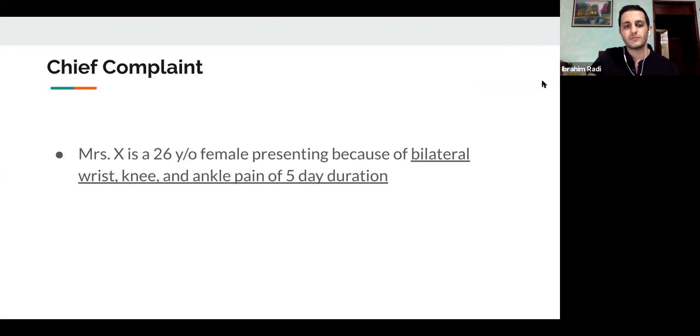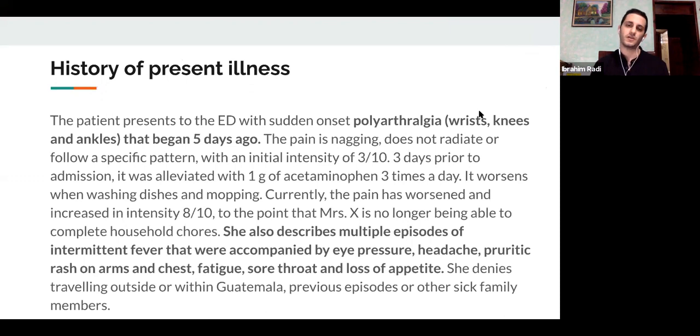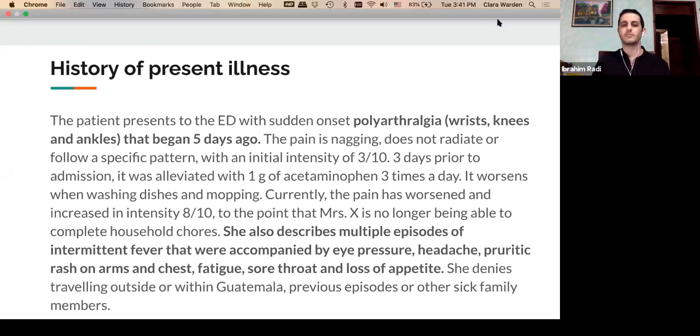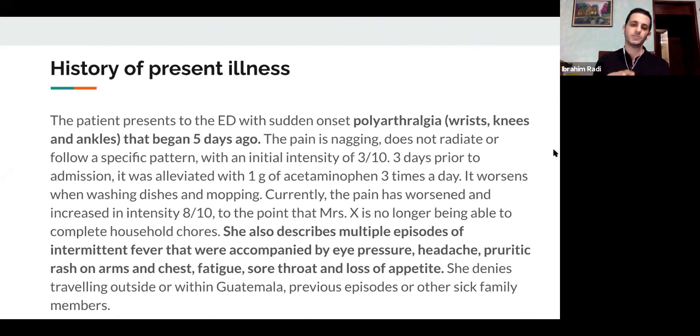So this case was also from a patient of mine from the same hospital, just in a different ward. So Mrs. X was a 26-year-old female presenting because of bilateral wrist, knee, and ankle pain of five-day duration. She initially presented to the ED with a sudden onset polyarthralgia that began five days ago. She described the pain as nagging that did not radiate or follow any specific pattern. Initially, it had an intensity of three out of 10, and three days prior to admission, it was alleviated with one gram of acetaminophen three times a day. She described that it worsened when washing dishes and mopping, and at that time, the pain had worsened and increased in intensity, eight out of 10, to the point that she no longer was able to complete household chores. Additionally to that, she described multiple episodes of intermittent fever that were accompanied by eye pressure, headache, pruritic rash on arms and chest, fatigue, sore throat, and loss of appetite. She denied traveling outside or within Guatemala has never had any previous episodes or other sick family members.